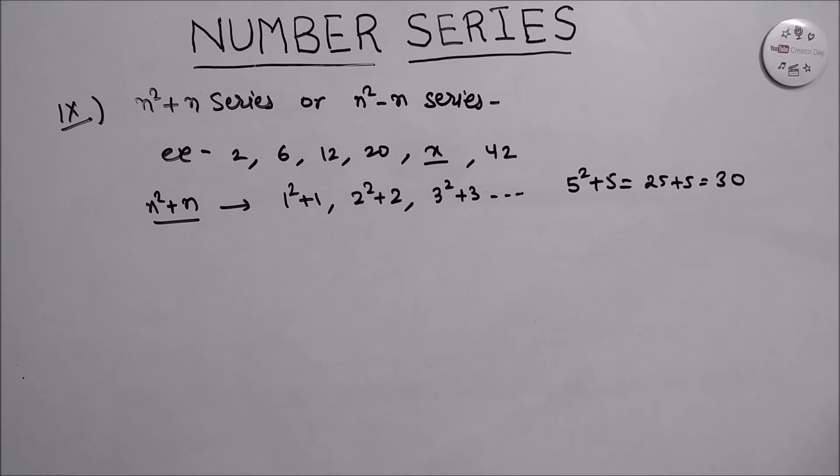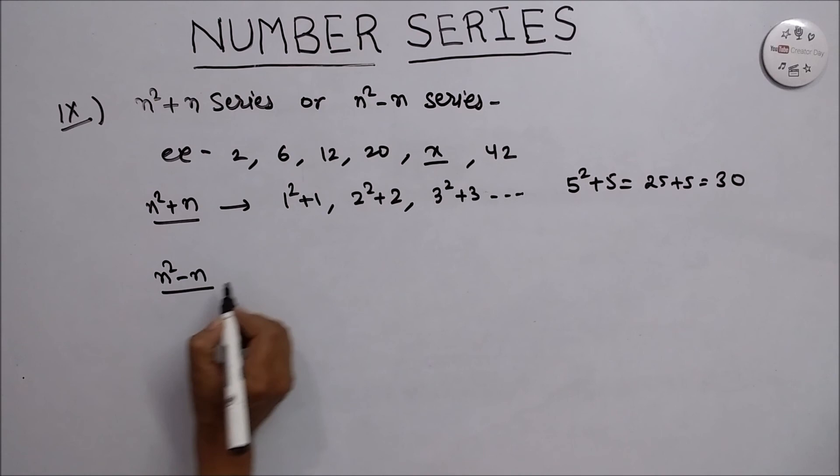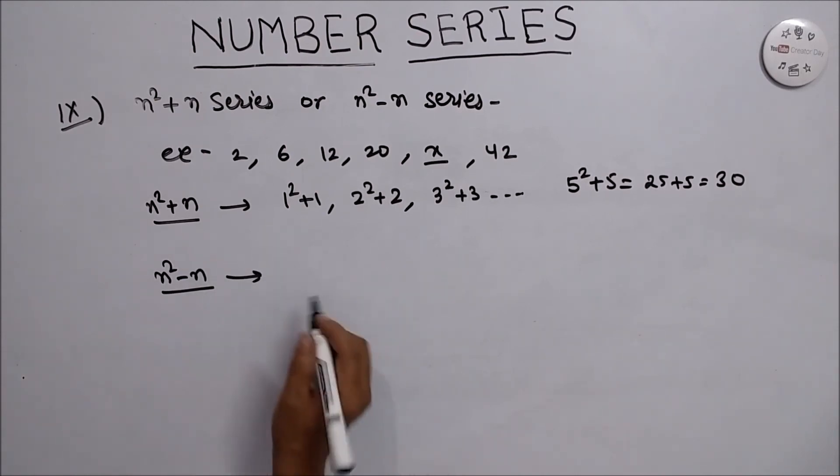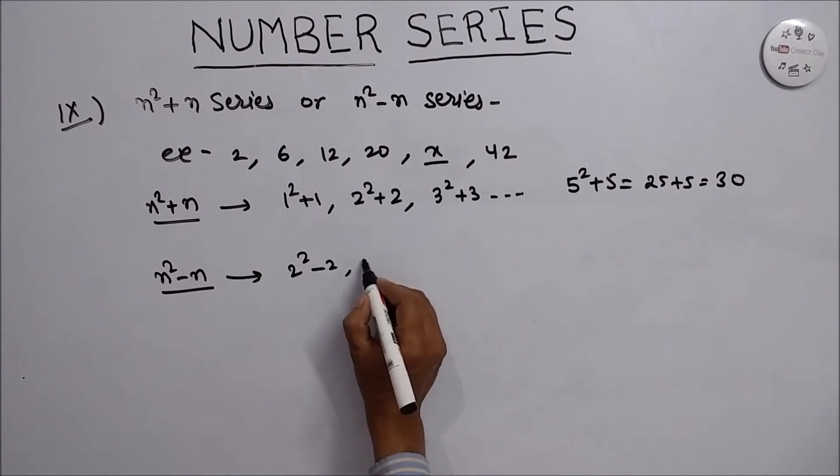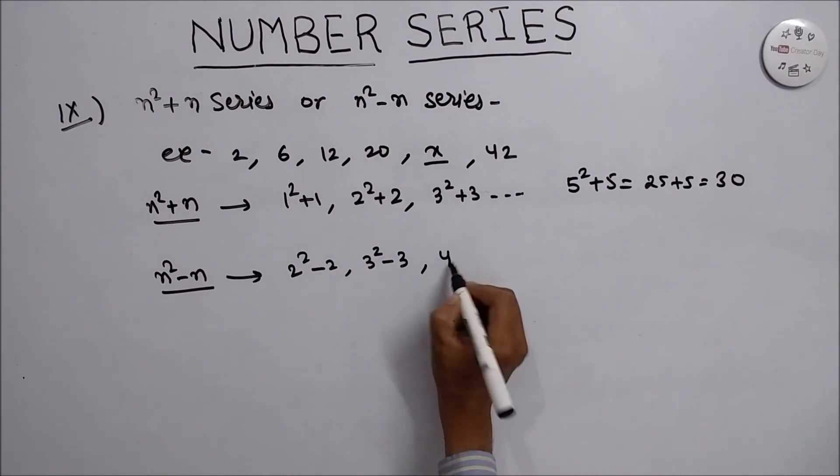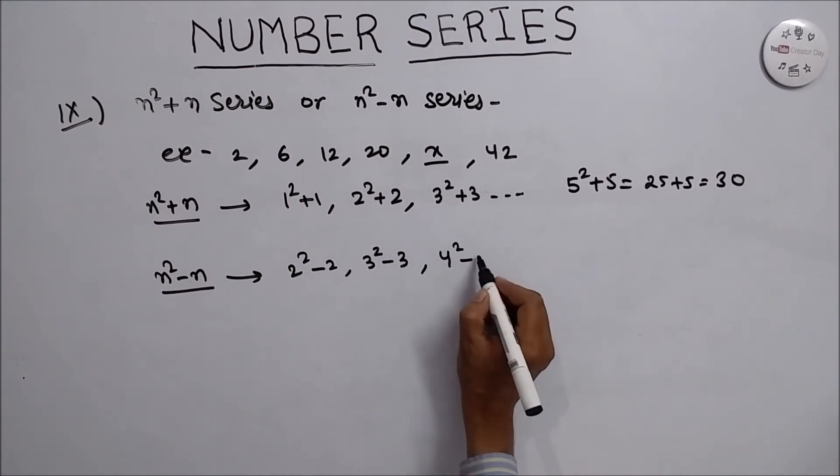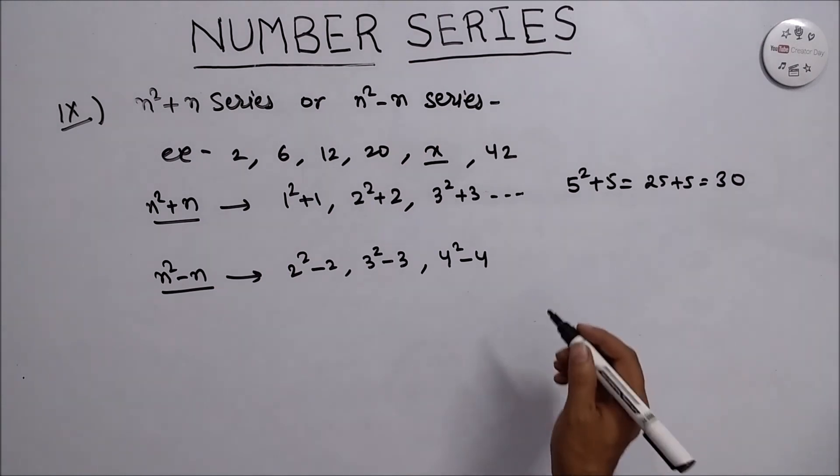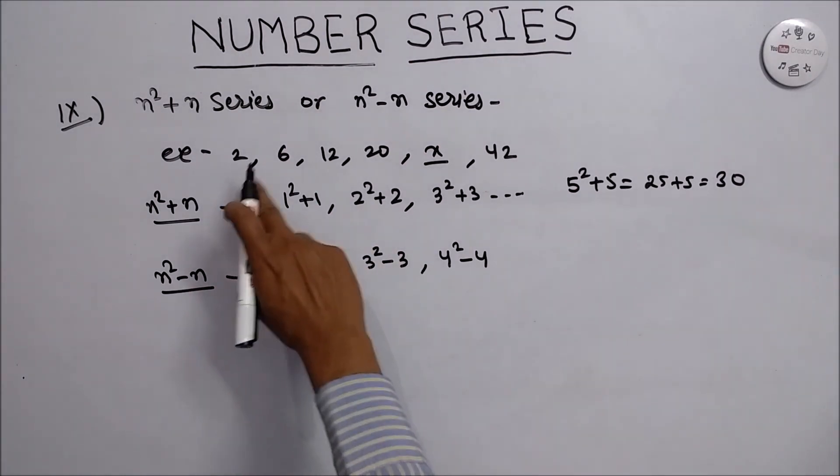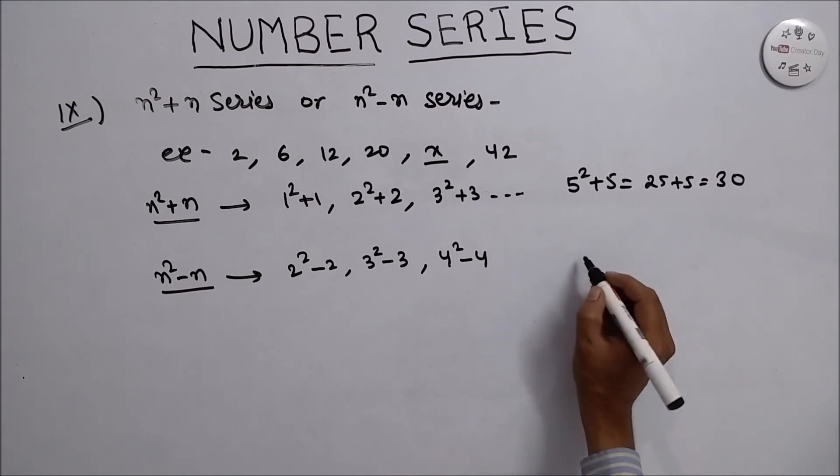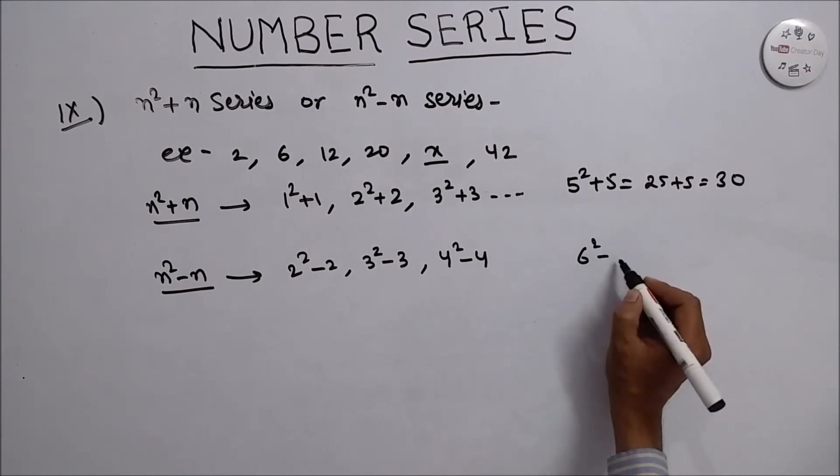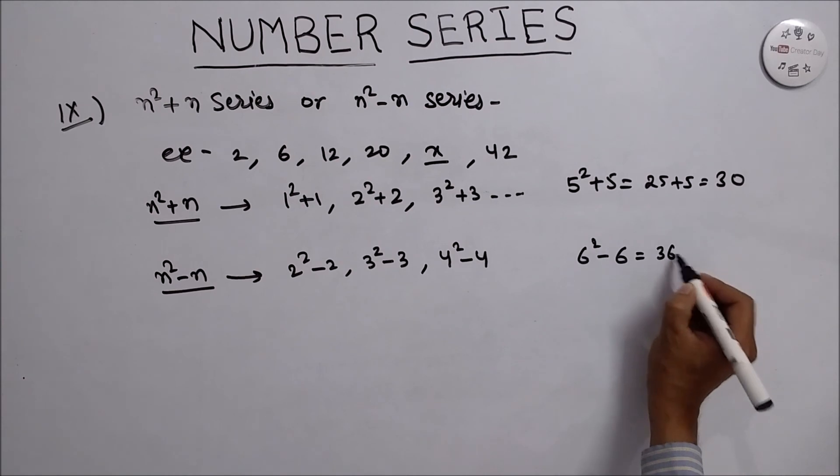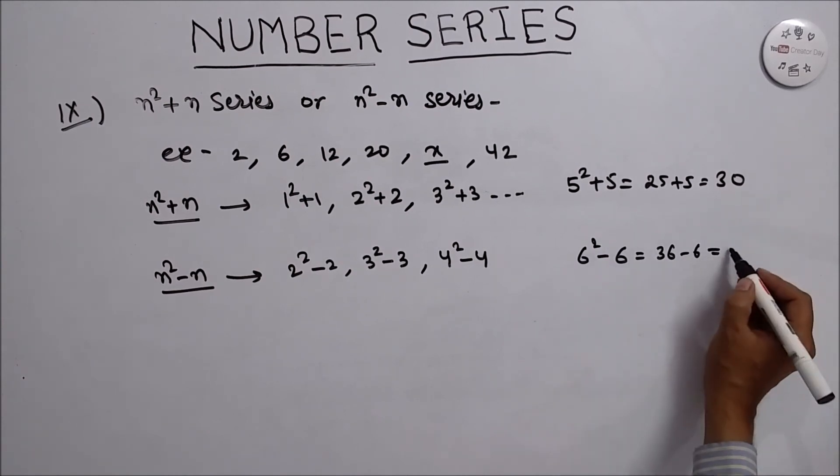Again, we solve this series with the help of this formula. For that, 2 square minus 2, 3 square minus 3, 4 square minus 4, and here 1, 2, 3, 4, 5. We are adding 1. That means 6 square minus 6, that is 36 minus 6, is equals to 30.